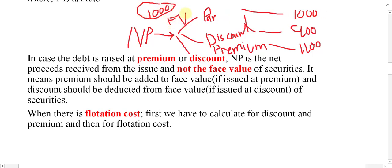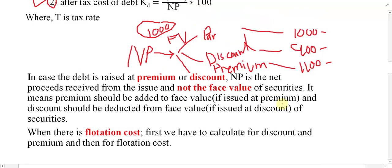Always use premium if shares are sold at premium, discount if sold at discount, and par if sold at par — never the face value. Also remember: when there is a flotation cost, first calculate the amount based on discount or premium, and then subtract the flotation cost. Flotation should be adjusted after accounting for discount or premium. Please watch the next videos to see how to calculate the cost of irredeemable debt.